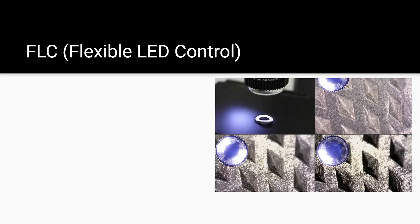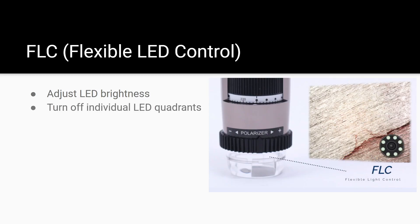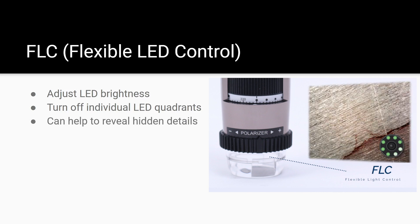Next up, we have FLC, or Flexible LED Control. This feature allows you to adjust the brightness of the LEDs on the Dynolite, as well as turn individual quadrants on or off to create angled lighting. This is helpful for revealing scratches and details on certain surfaces.